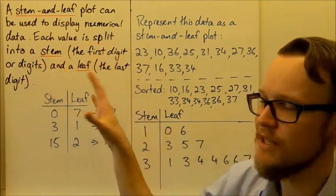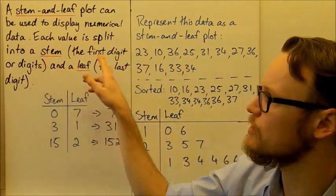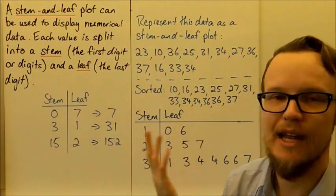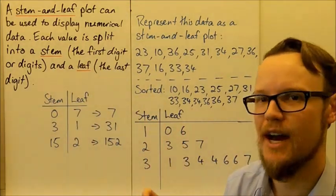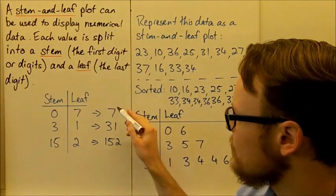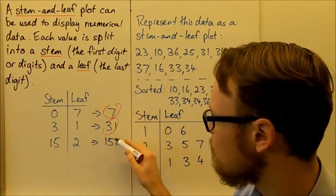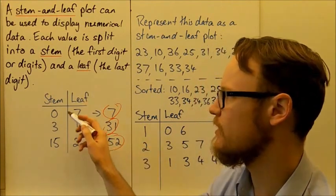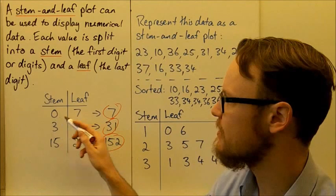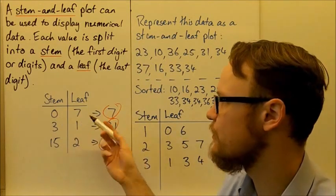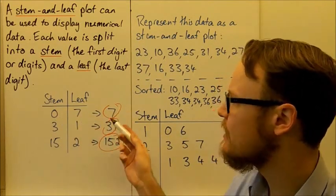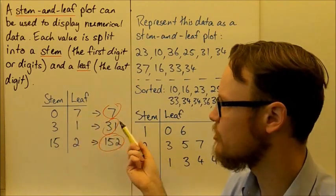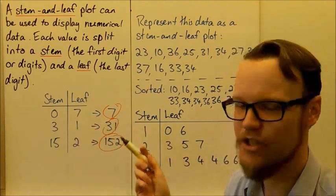Each value is split in a stem and leaf plot into a stem which is the first digit, or digits, and a leaf, which is the last digit of each of the different data points. So here if I've got the data points 7, 31, 152, each of these data points would look in a stem and leaf plot like this. So the stem is 0 here, so 0 is the first number. There's only one number here, so our leaf has to be the last number, 7. So 0, 7 is just 7.